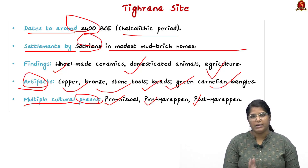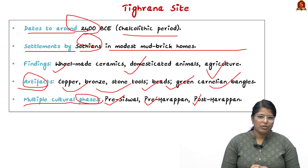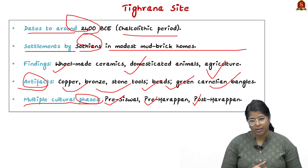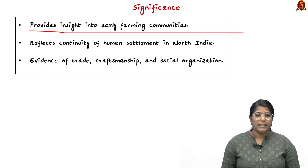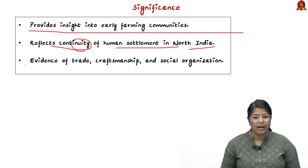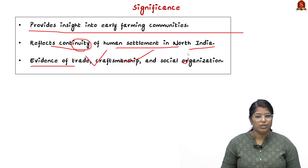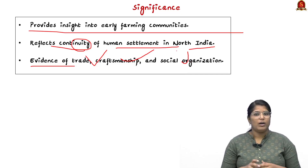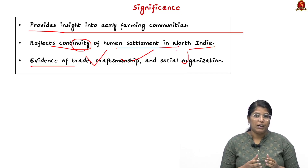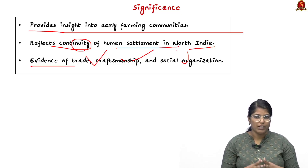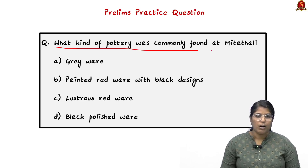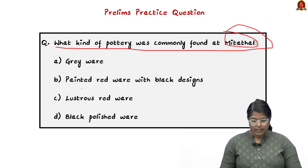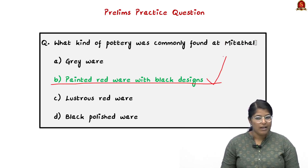These two sites are very important; mark them on the map as questions on Indus Valley Civilization are asked every year in prelims and since these are in news they can be directly asked. The significance of these findings: they provide insights into early farming communities, reflect continuity of human settlement in northern India, and provide evidence of trade, craftsmanship, and social organization — helping us understand the lifestyle and culture of people from that period and the evolution of human civilization. A prelims question: what kind of pottery was commonly found at Mitatel? The correct answer is option B — painted red ware with black designs.